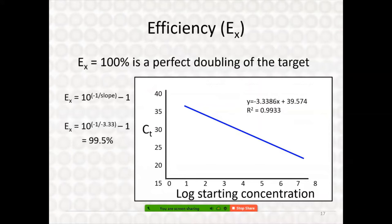To calculate efficiency from slope, the software gives you R² and the equation y = mx + b. That slope is carried into the calculation for determining efficiency. For example, a slope of −3.4 gives a 99.5% PCR efficiency.